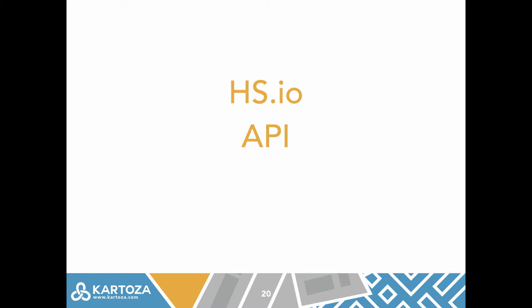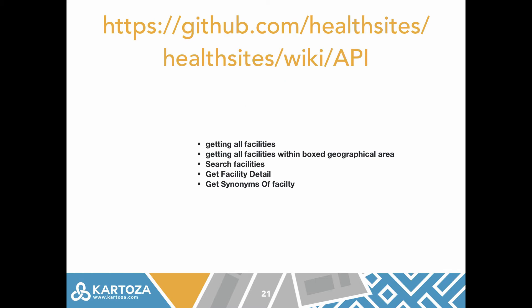As well as having the platform, we also have an API, which is a way for programmers to interact with the platform. This is described in the HealthSites Wiki. At the moment it's fairly simple — you can get all facilities, get all facilities within a boxed geographical area, search for facilities, get facility details, and get synonyms for a facility. In the future we're also going to add capabilities to update, delete, and insert new facilities via the API.